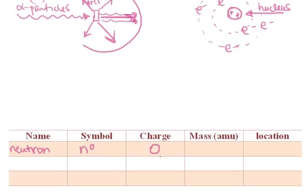and so it's called the neutron. And that has a symbol of N0, and like I said, it's neutral, so it has a charge of zero, and its mass is one atomic mass unit. And this also resides in the nucleus.